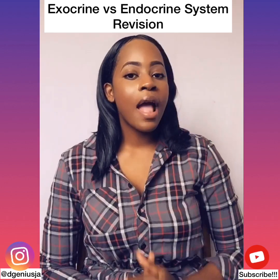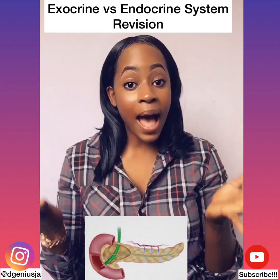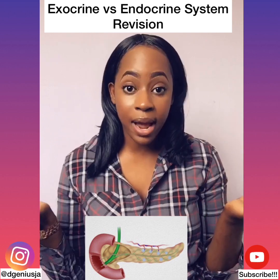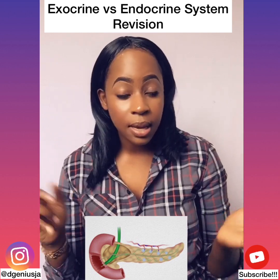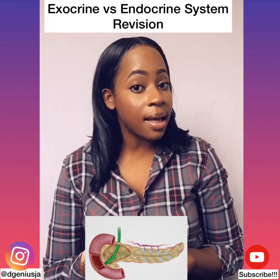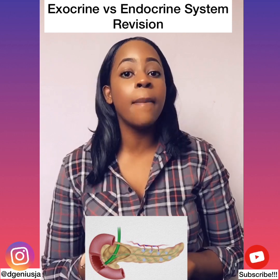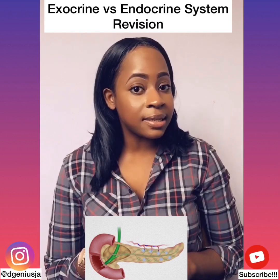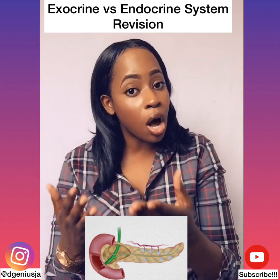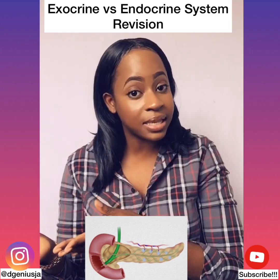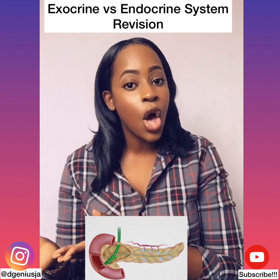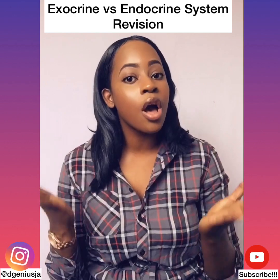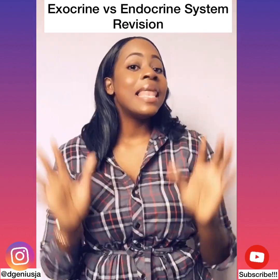Number four, the pancreas. The pancreas has acinar cells which make pancreatic juices, as well as epithelial cells which make bicarbonate. These substances are secreted into ducts which lead to the digestive cavity, neutralizing the acidic food coming from the stomach.